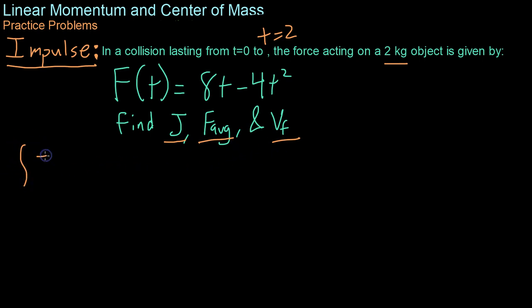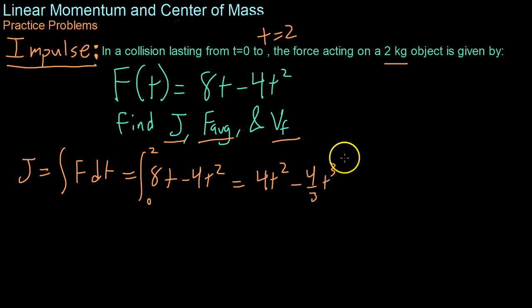So we'll start off by finding the total impulse. And if you'll remember from last video, impulse j equals the sum of force with respect to time. And because we have an equation for force in terms of time, that makes it very easy. We just have to plug in the equation. So it's the integral from time t equals 0 to time t equals 2 of 8t minus 4t squared.